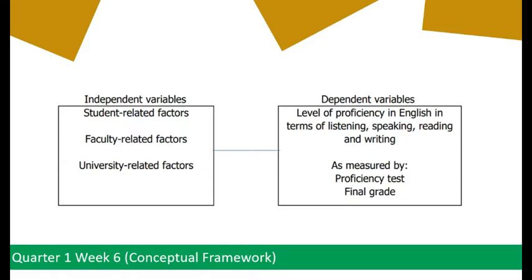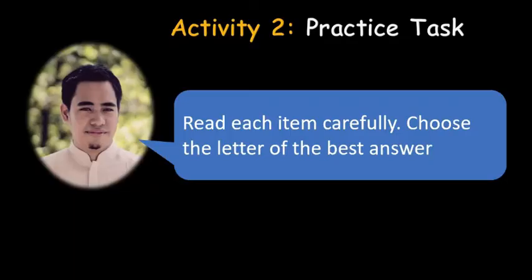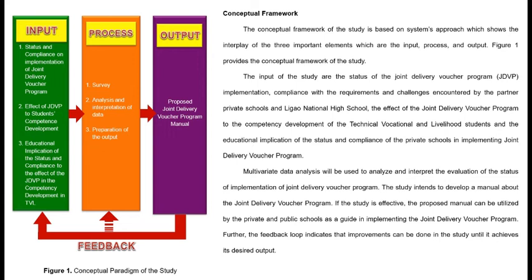For the independent variable, we have student-related factors, faculty-related factors, and university-related factors. For the dependent variable, we have the level of proficiency in English in terms of listening, speaking, reading, and writing as measured by proficiency test and final grade. This is also an example of how the Conceptual Paradigm and Conceptual Framework work together — the illustration is the Conceptual Paradigm and the explanation is the Conceptual Framework.